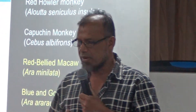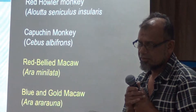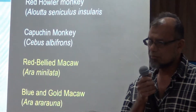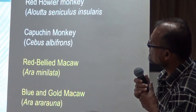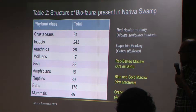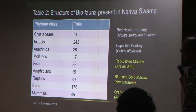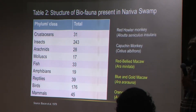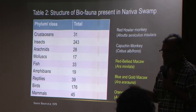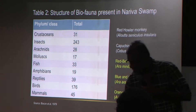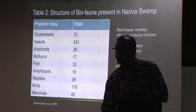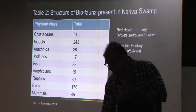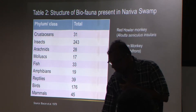Looking at the biofauna of the Nariva Swamp, it's composed of a lot of important things like crustaceans, insects, and arachnids. It's a really important site for studies and research, and for people to visit and enjoy the area.